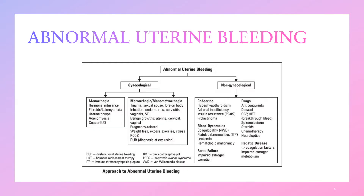Moving to menstrual irregularities, which can also be named abnormal uterine bleeding. There are two major causes: gynecological and non-gynecological. Under the gynecological, we have menorrhagia. Examples of causes of menorrhagia are hormone imbalance, fibroids, uterine polyps, adenomyosis, and use of a copper intrauterine device.